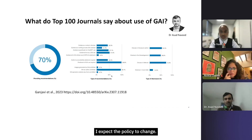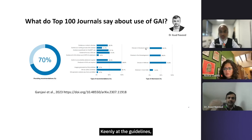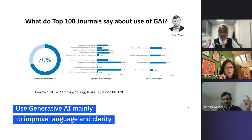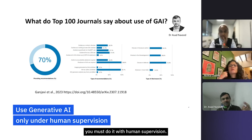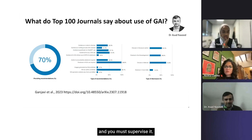This is something that's evolving over time, and I expect the policy to change. Basically what this means is 94.3% of journals actually allow use of generative AI. But when you look again keenly at the guidelines, two main things come out. First, when using generative AI you should use it mainly to improve language and clarity. Second, when using generative AI you must do it with human supervision — you can't let it loose and let it do things on its own.